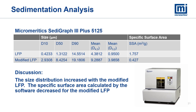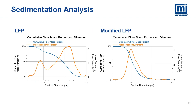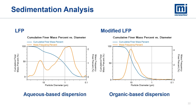You can see the difference in the D50 and D10 values — there's a dramatic difference between those values. You can also see it in the mean D43 value, which is the mass-weighted mean diameter. Also reported here is the D32 value, which is the surface area-weighted mean diameter, as well as the specific surface area calculated from the particle size distribution. Looking at the size frequency plot, we can see that the LFP is bimodal and the modified LFP has only one mode. The single mode of the modified LFP seems to match the coarser mode of the LFP distribution around 10 microns. It is important to note that the LFP was dispersed in water with surfactants and the modified LFP was dispersed in an organic liquid with surfactants since it is hydrophobic.